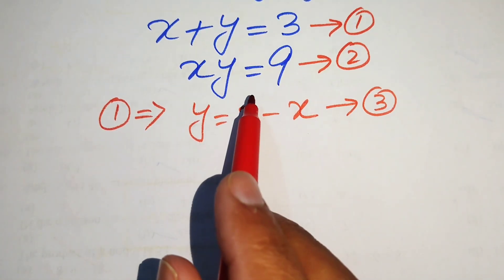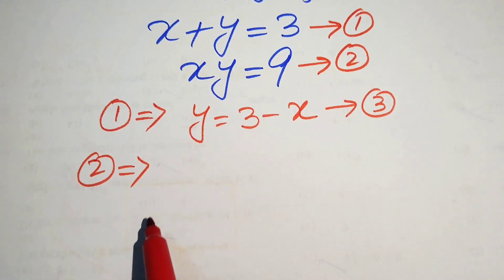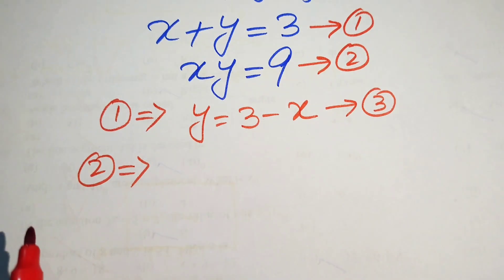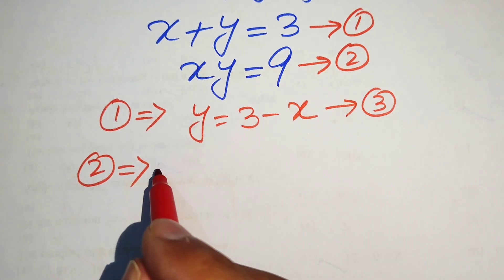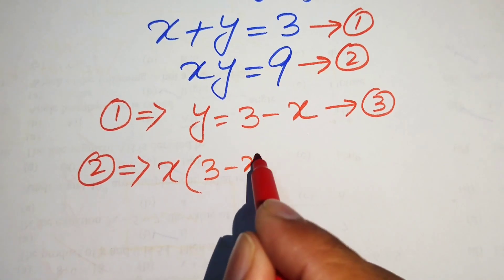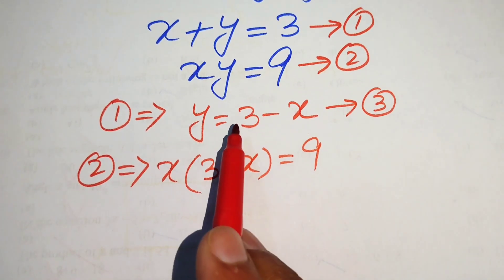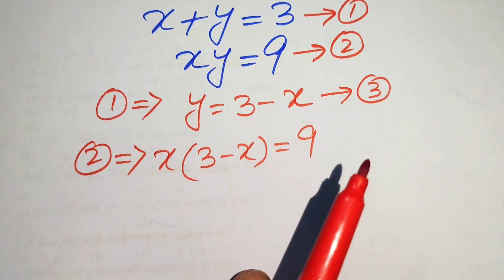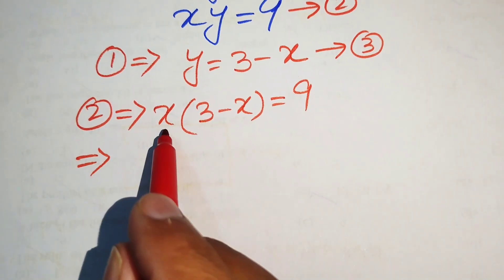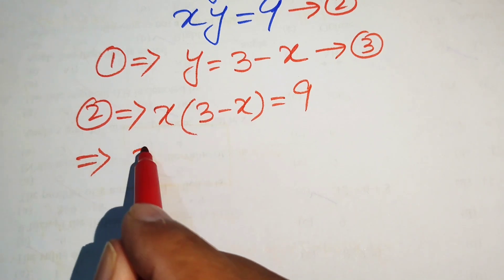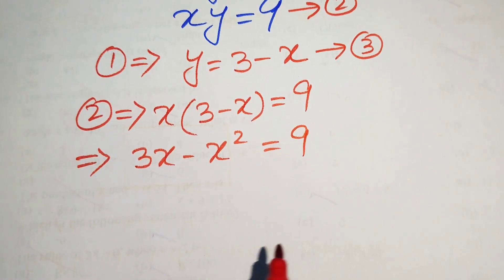Next, we substitute the value of y into equation number 2. So equation 2 becomes x times (3 minus x) equals 9. Multiplying out, we get 3x minus x squared equals 9.